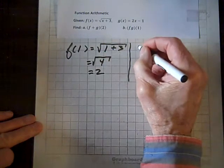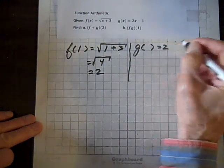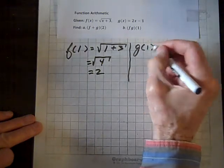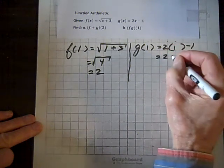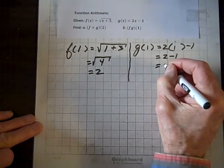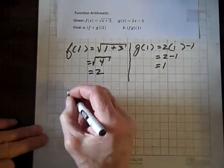Now, g of whatever equals 2 times whatever minus 1. If I put a 1 here, I have to put a 1 there. And 2 times 1 is 2 minus 1, which equals 1. So g of 1 equals 1.